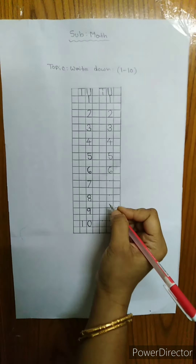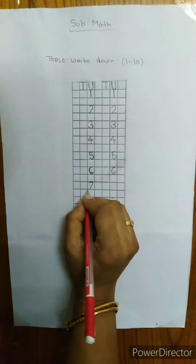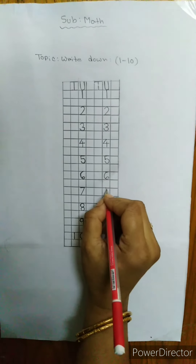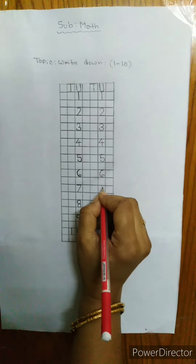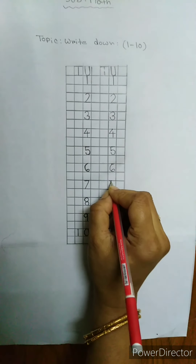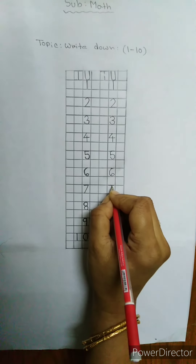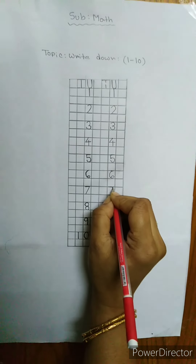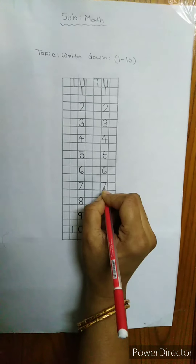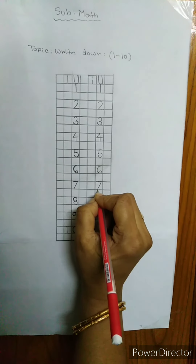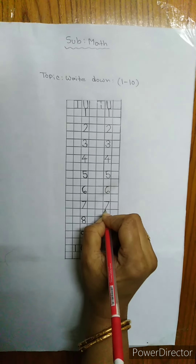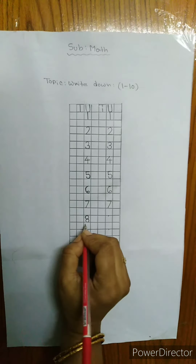Now, the next is 7. I will write here. Start from here: a small sleeping line and a small sliding line, and touch the down line.